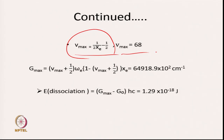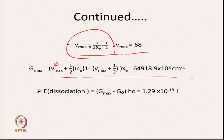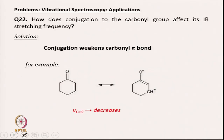Substituting V_max into G(V) gives G_max — the energy of the highest vibrational level. The dissociation energy is E_diss = (G_max − G₀) × hc, converting from cm⁻¹ to joules. This gives the dissociation energy in joule units.